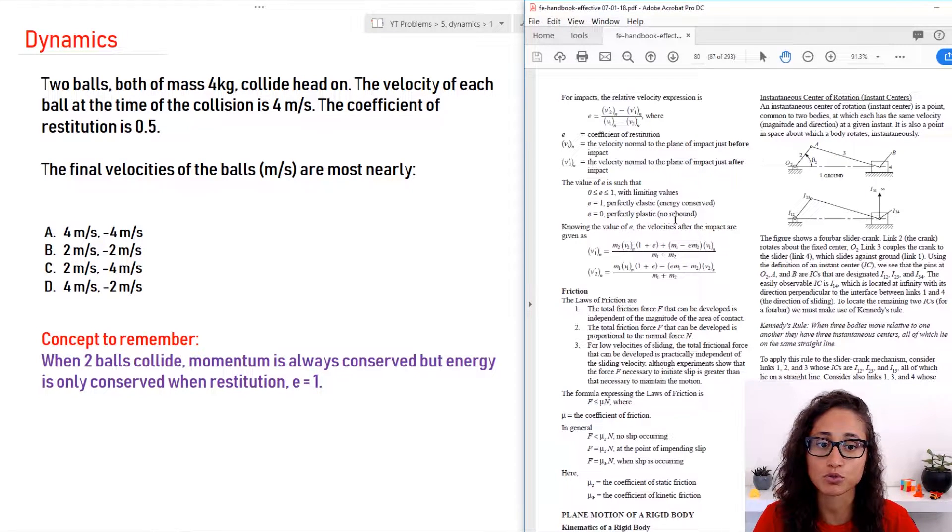If you have E equal to 0, you have perfectly plastic, no rebound, but your energy is not conserved. But remember, momentum is always conserved. So whenever you have two objects that are colliding with each other and you want to find the velocities, just always remember momentum equations. And if you're given the E, which is the restitution, that's another hint that you need to use the momentum equation.